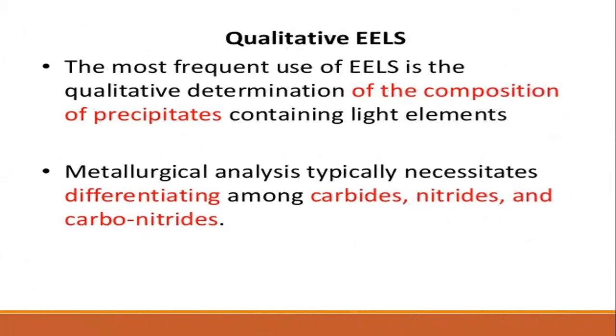Qualitative ELS: the most frequent use of ELS is the qualitative determination of the composition of precipitates containing light elements in metallurgical analysis. Typical necessities include differentiating among carbides, nitroids, and carbon nitroids.